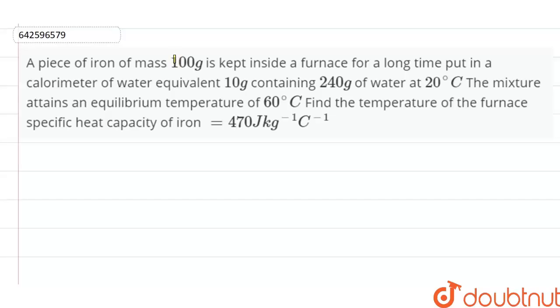A piece of iron of mass 100 grams is kept inside a furnace for a long time. It is put in a calorimeter of water equivalent 10 grams containing 240 grams of water at 20 degrees Celsius. The mixture attains an equilibrium temperature of 60 degrees Celsius. Find the temperature of the furnace. The specific heat capacity of iron is given as 470 joules per kilogram per degree Celsius.